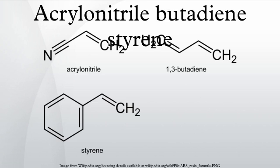ABS combines the strength and rigidity of acrylonitrile and styrene polymers with the toughness of polybutadiene rubber. While the cost of producing ABS is roughly twice the cost of producing polystyrene, it is considered superior for its hardness, gloss, toughness, and electrical insulation properties. According to Plastics Europe, industrial production of 1 kg of ABS resin in Europe uses an average of 95.34 MJ and is derived from natural gas and petroleum.